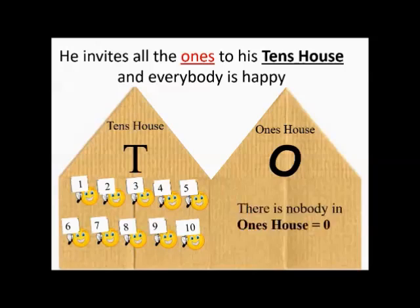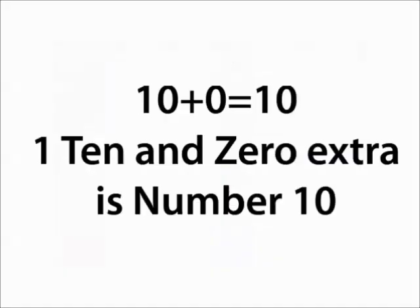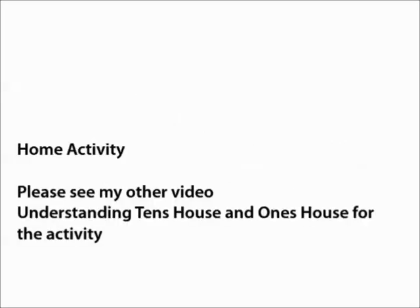But who is there in the 1's house now? Nobody — 0. Therefore, 1 ten and 0 extra is number 10. Say with Nanda Ma'am: 1 ten and 0 extra is number 10. Now, to understand more about 10's house and 1's house, please see the other video, children. Okay? Bye!